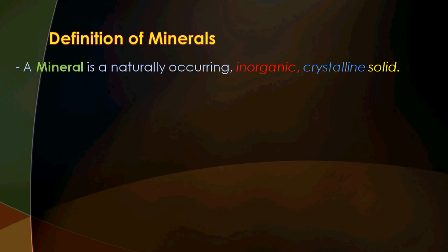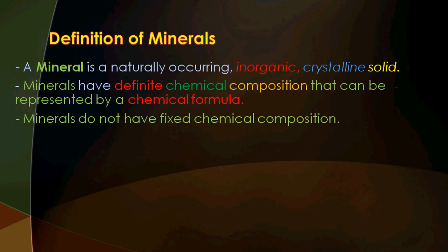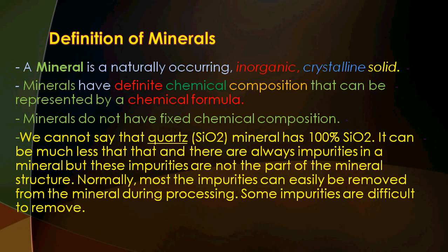Minerals are solid — they are not liquid. A mineral is naturally occurring, not man-made; inorganic, not organic; crystalline, not amorphous; and solid, not liquid. Minerals have a definite chemical composition that can be represented by a chemical formula. However, minerals do not have a perfectly fixed chemical composition — for example, quartz can be much less than 100% SiO2 due to impurities. These impurities are not part of the mineral structure and can mostly be removed during processing, though some are difficult to remove.